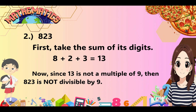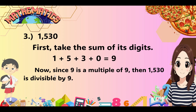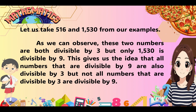For 823: the sum of its digits is 8 plus 2 plus 3 equals 13. Since 13 is not a multiple of 9, then 823 is not divisible by 9. For 1530: 1 plus 5 plus 3 plus 0 equals 9. Since 9 is a multiple of 9, then 1530 is divisible by 9. Comparing 516 and 1530, both are divisible by 3, but only 1530 is divisible by 9. This gives us the idea that all numbers divisible by 9 are also divisible by 3, but not all numbers divisible by 3 are divisible by 9.